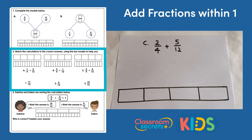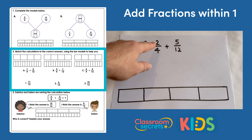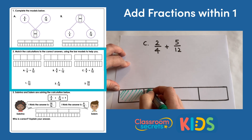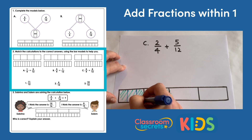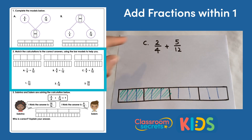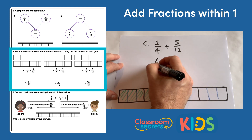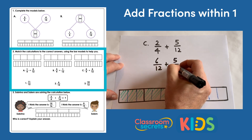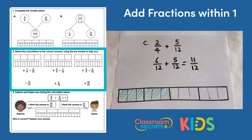C is two quarters add five twelfths. Again, we can convert the quarters to twelfths by multiplying the denominator by three. Looking at the bar model, we have our two quarters — the bar model is split into quarters and we're looking at two of them. We convert the quarters to twelfths by multiplying each of those quarters by three. So we're looking at two of those quarters, and now we can see we have six of those twelfths. Six twelfths add five twelfths means we have eleven twelfths — and that's answer number one.